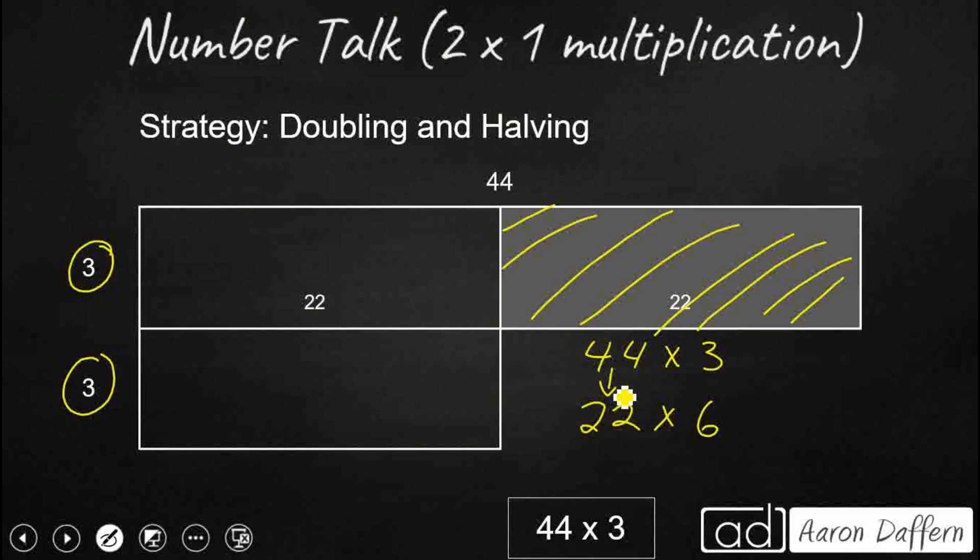We took our 44, cut it in half. We took our 3, we doubled it. Still a balanced equation. So now we have 22 times 6. That's still going to get us our 132 because that's really 120 and then an extra 12.